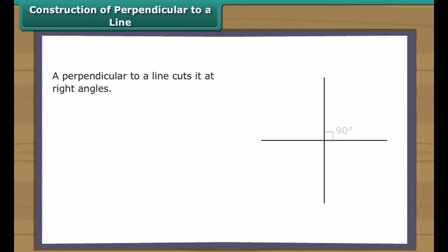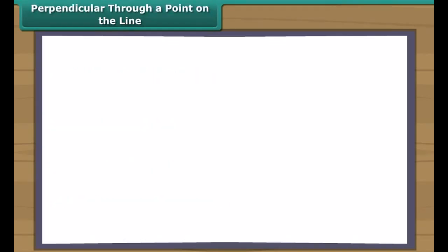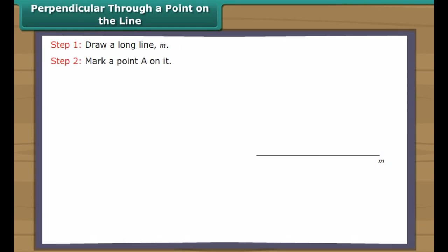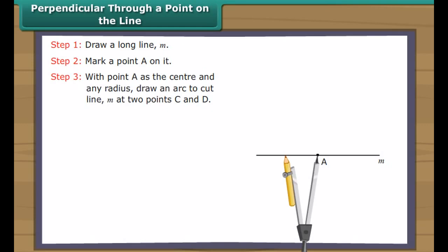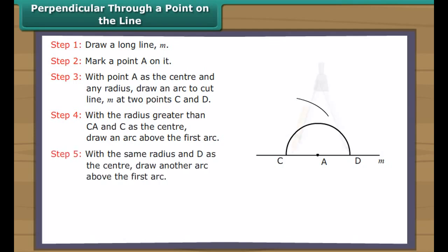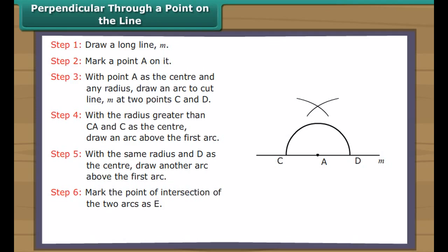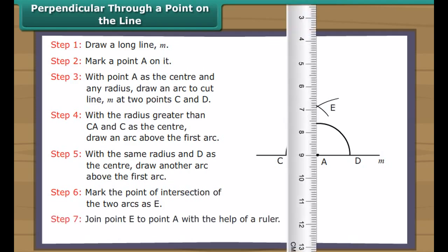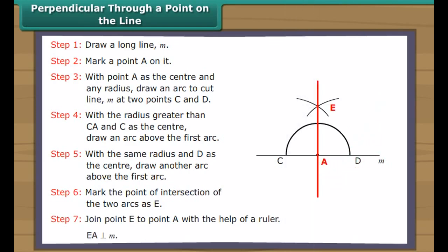Construction of perpendicular to a line. A perpendicular to a line cuts it at right angles and can be drawn in two ways: through a point on the line, or through a point outside the line. Perpendicular through a point on the line: Draw a long line M and mark a point A on it. With point A as the centre and any radius, draw an arc to cut line M at two points C and D. With a radius greater than CA and C as the centre, draw an arc above. With the same radius and D as the centre, draw another arc. Mark their intersection as E. Join E to A. EA is perpendicular to line M.